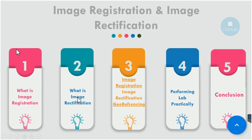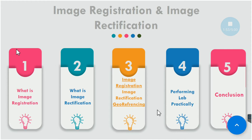Image rectification is different — instead of another image, if you have some vector layer, some shapefile, or some map, and you align an image based on that shapefile or vector map, that is called image rectification. Image registration is simply image-to-image alignment; image rectification is image-to-map or image-to-vector-file alignment. Georeferencing is simply defined as when you have a sheet and you assign coordinates to its corners or other points to match the true coordinates.